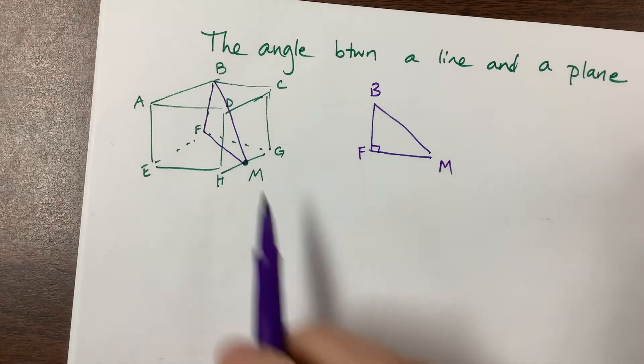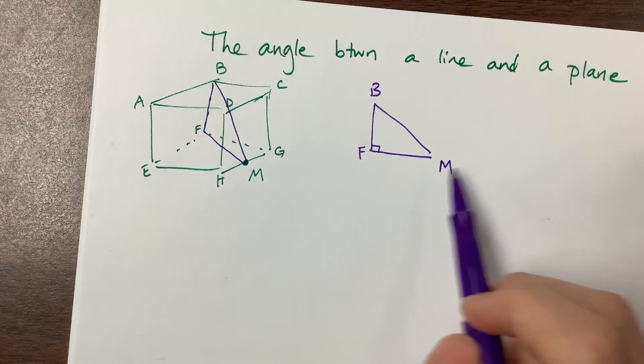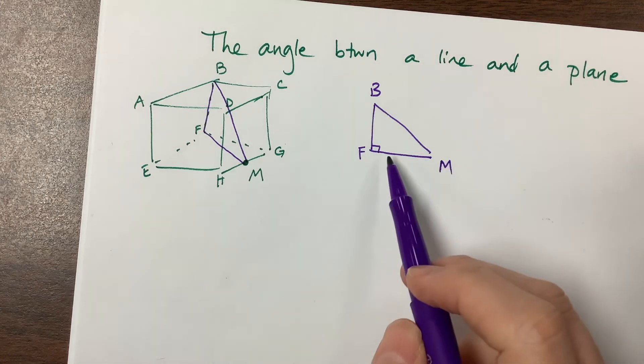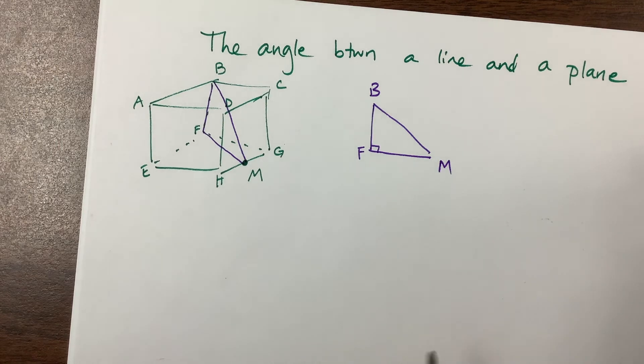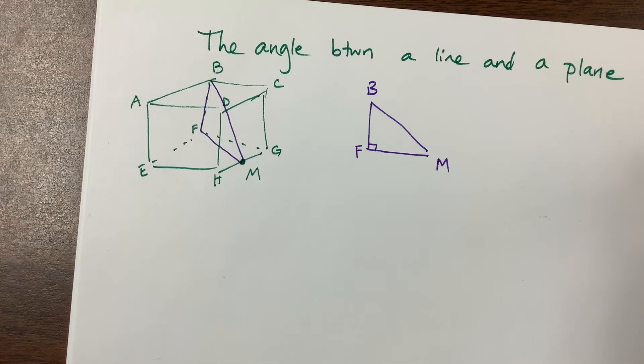So I would recommend that when you have this picture and you've looked at the different components, draw it off to the side and make sure you label it, because then you can see what you know. If this is a right triangle, you could use trig or the Pythagorean theorem, whatever you need, depending on the situation they've given you.